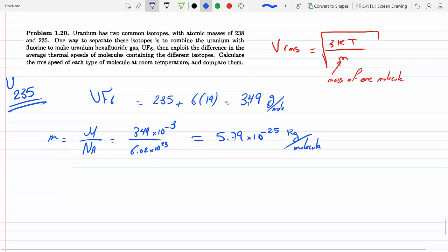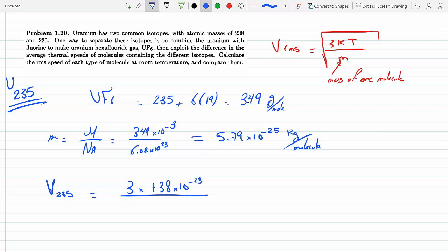Now I just plug it in. That means V for 235 is equal to the square root of 3 times Boltzmann constant, which is 1.38 times 10 to the minus 23, times the temperature 300 room temperature, divided by 5.79 times 10 to the minus 25.